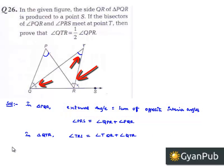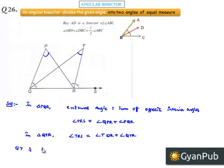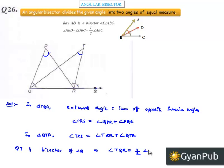Now, we know that QT is the bisector of angle Q. Therefore, we can say that angle TQR is nothing but half times angle PQR.